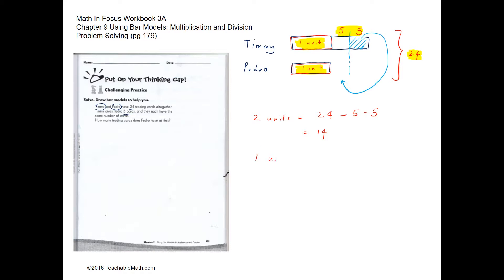Moving on, one unit is equal to 14 divided by 2, which is 7. So now we know one unit is 7. We know this is 7 and we know this is 7. So how many trading cards does Pedro have at first?